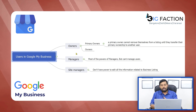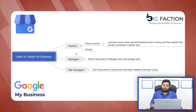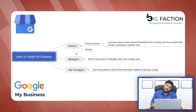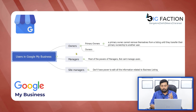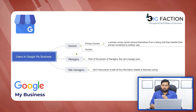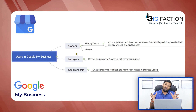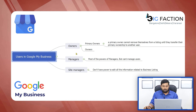You have to understand the powers of managers. Managers have most of the powers that owners have, but some things are reserved only for owners. Site managers, on the other hand, don't have a lot of power — they cannot edit all the sections of Google Business.